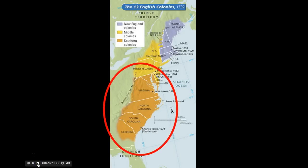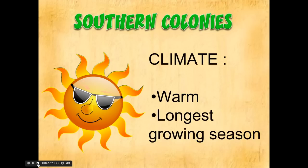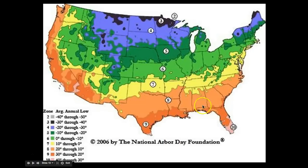Let's move on to the final region — the southern colonies. The colonies in this region are Georgia, South Carolina, North Carolina, Virginia, and Maryland. Note that the other colonial regions have four colonies each, but the southern colonies have five. As far as climate, they're going to be warmer, and because of their location they'll have the longest growing season. So they're able to grow crops in the south that people in the middle colonies or New England colonies are not able to grow, giving them a completely different kind of agriculture.